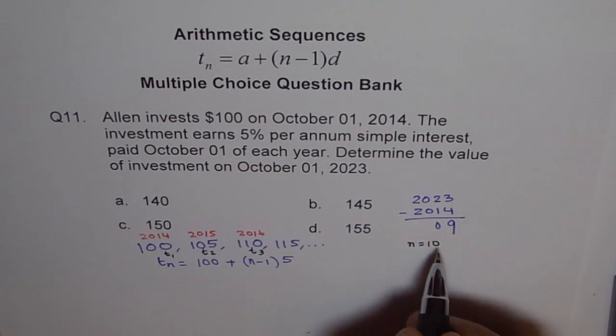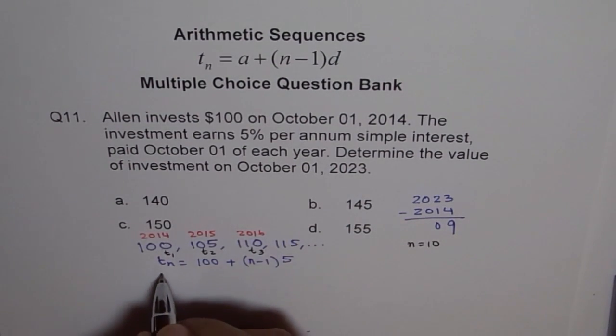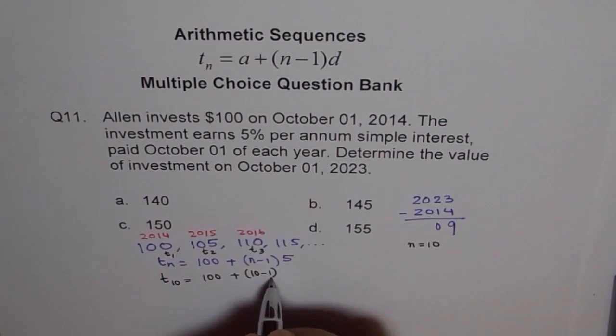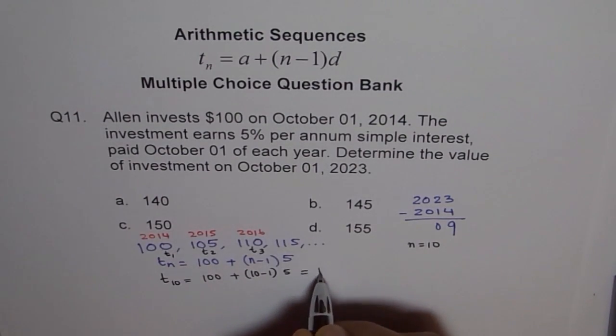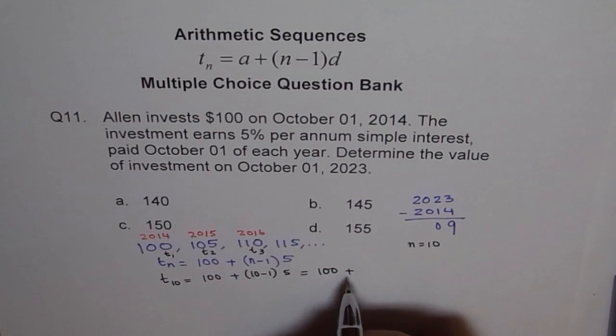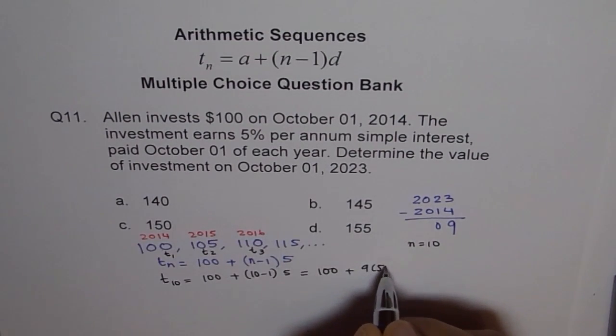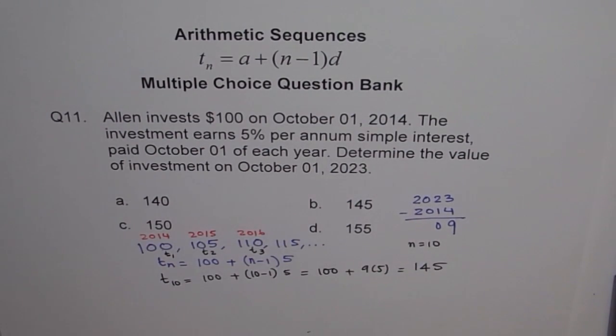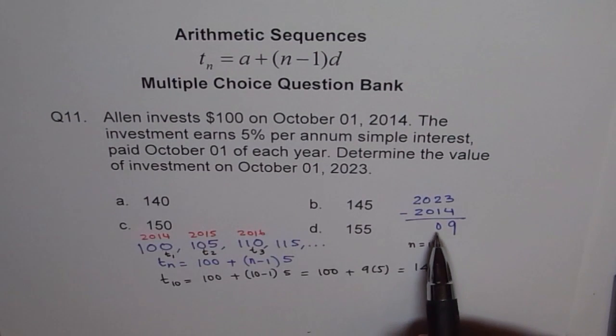So we get T_10 equals to 100 plus 10 minus 1 into 5, which is 100 plus 9 times 5, which is 45. So we get 145 dollars as our total money after 9 years of investment.